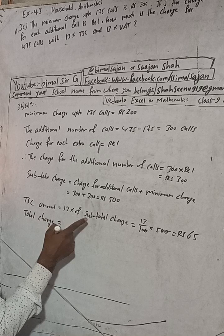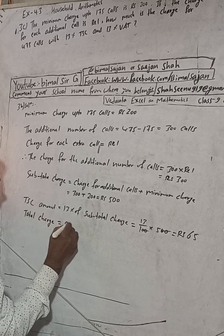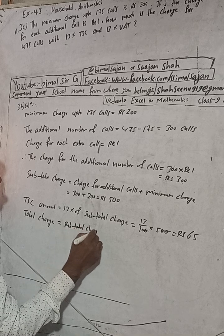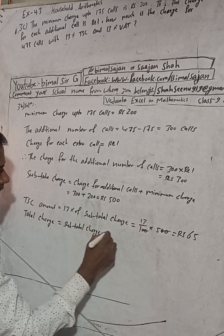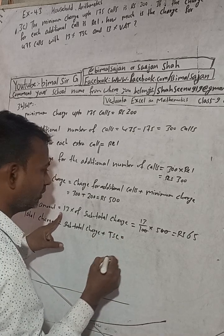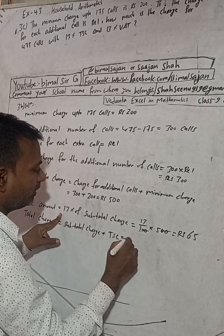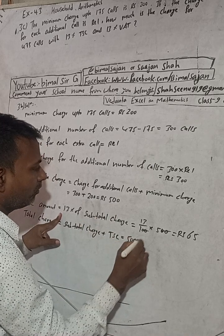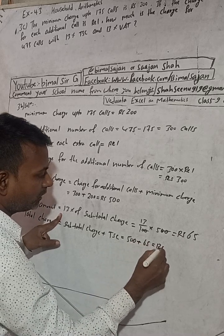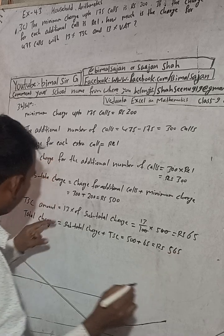Total charge plus TSE amount: 500 plus 65 equals Rs.565. So the total charge including TSE amount is Rs.565.